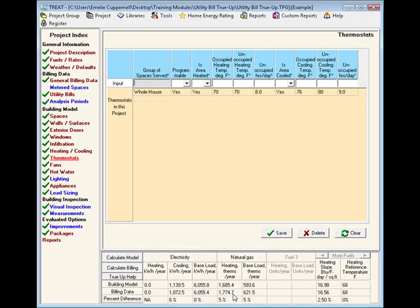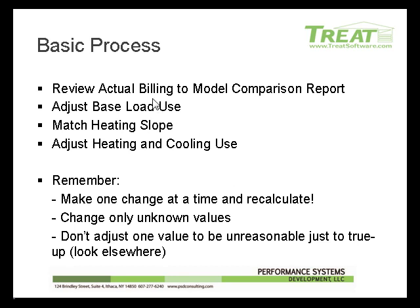Let's review. First, review the actual billing to model comparison report — this will give you a good visual of the difference between billing and model results and help you identify any atypical bills. Next, make adjustments to your base load use. Then look at the difference between your heating slopes and make adjustments if necessary to your walls and surfaces, windows, doors, and infiltration rates. Finally, change any unknown values for your heating and cooling inputs to calibrate use with the billing data. Remember: make one change at a time and then recalculate, change only unknown values, and keep your adjustments reasonable.